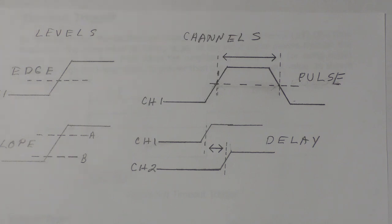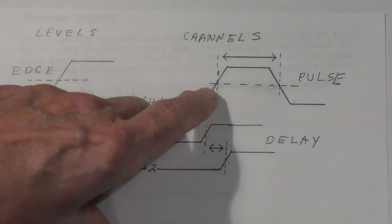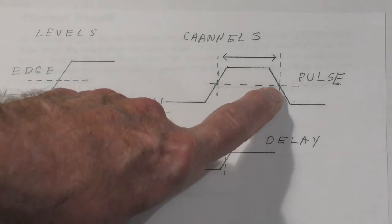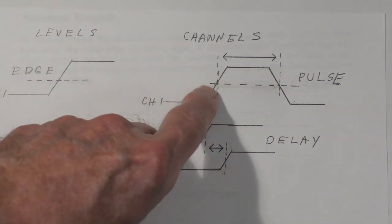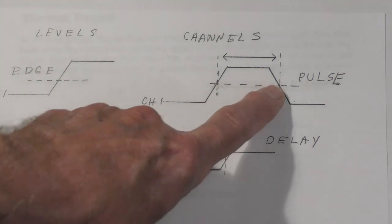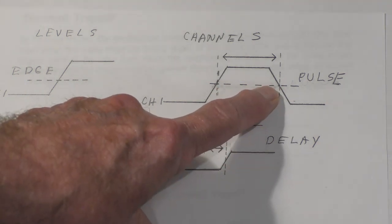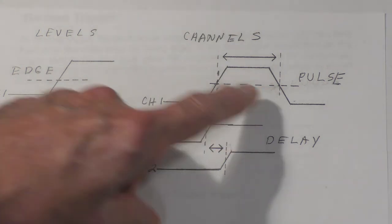And I introduced this because please understand that sometimes you will find that there's more than one way to skin the cat. And in this case, if you were looking at a clock pulse and you wanted to know if there were any clock pulses that were longer than or shorter than the specification, you could either use the pulse trigger or you could use the timeout trigger.